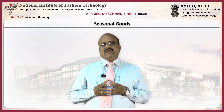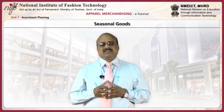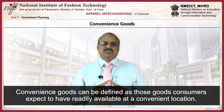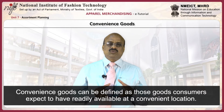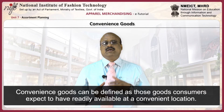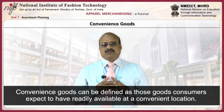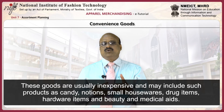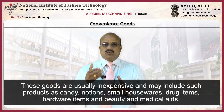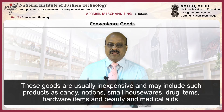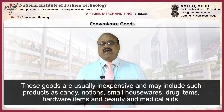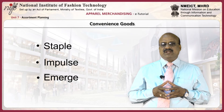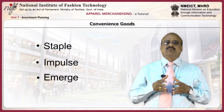Assortments may also be planned for special promotional events such as Mother's Day and Father's Day. Convenience goods can be defined as those goods consumers expect to have readily available at a convenient location. These goods are usually inexpensive and may include products such as candy, notions, small housewares, drug items, hardware items, and beauty and medical aids. Convenience goods can be further classified into staple, impulse, and emergency goods.